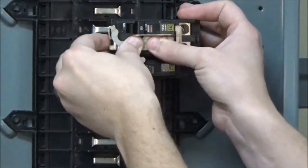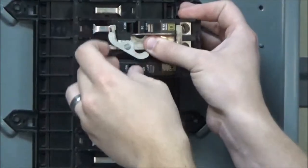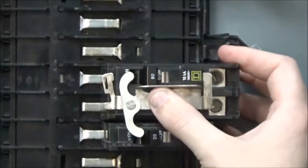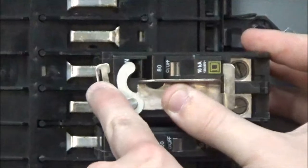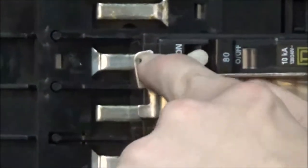And then you will use a screwdriver to twist this tab into this notch on the breaker.